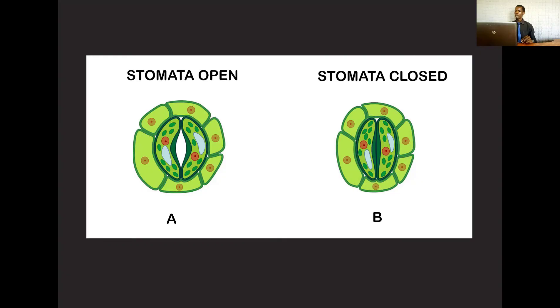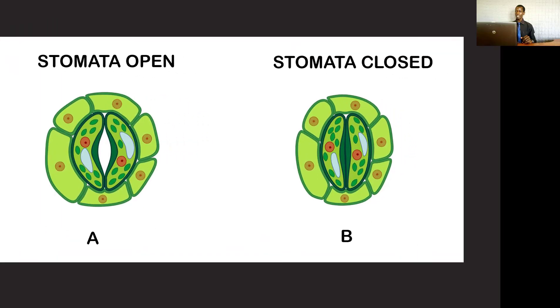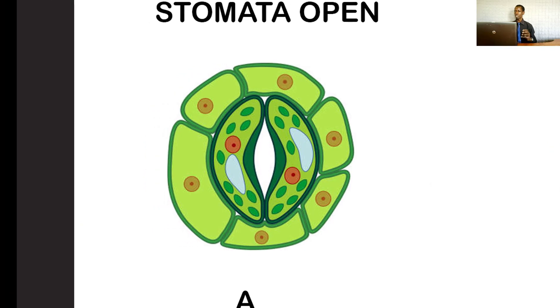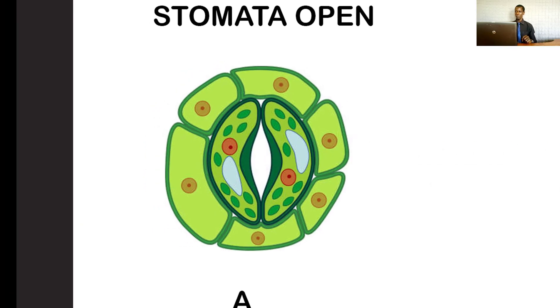This is a clear explanation of how the process of osmosis facilitates opening and closing of the stomata. When the guard cells do not have enough water in them, they remain flaccid. But when they absorb more water from the neighboring epidermal cells, the cells become turgid, leading to opening of the stomata. So the process of osmosis has led to opening and closing of the stomata.